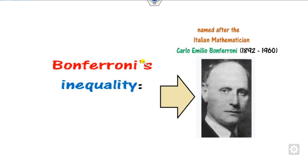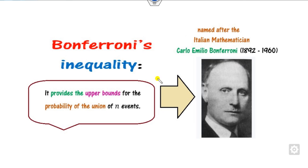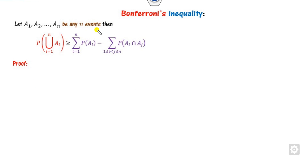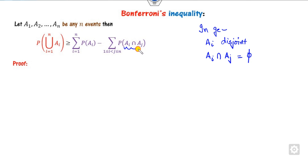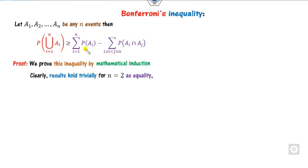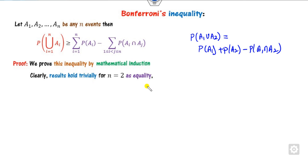Now for the second inequality — the Bonferroni inequality, proposed by C.E. Bonferroni — it provides upper bounds for the probability of the union. The events A_i are not necessarily disjoint. When A_i's are disjoint, the intersection terms become empty sets with probability zero, so equality holds. For N=2, the equality holds directly from the addition rule: probability of A union B equals probability of A plus probability of B minus probability of their intersection.